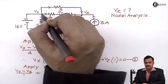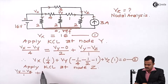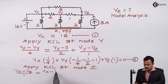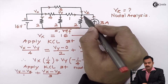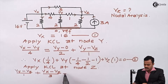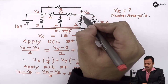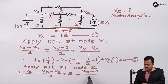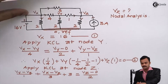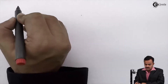For the 3 ohm branch, starting at X and ending on Z, it is Vx minus Vz divided by 3. The 3 ampere current source contributes directly, so I write plus 3. The only outgoing current is the one starting at Z ending on the reference through the 2 ohm resistance.